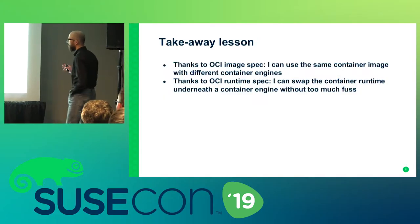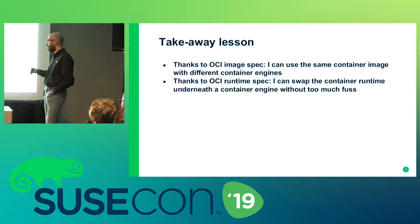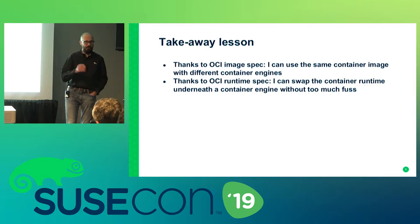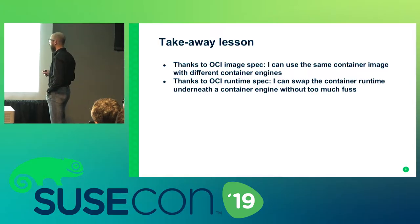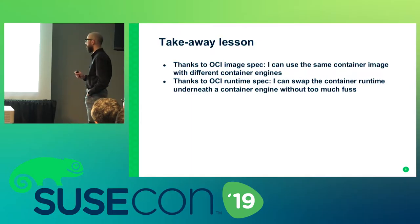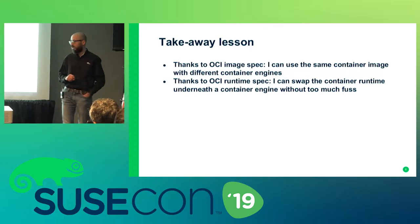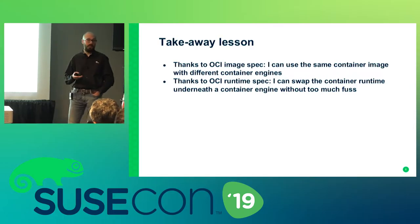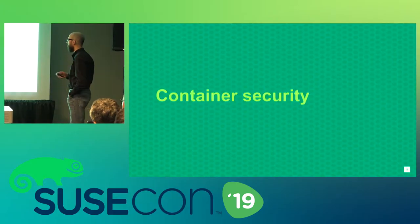The key takeaway: thanks to the image specification, you can take a container image and use it with different container engines — Podman, Docker, CRI-O. Thanks to the runtime specification, you can swap the container runtime underneath the container engine. So you can take Docker and instead of using RunC, use a different runtime, and everything will work the same way — it is just a configuration change in a text file.